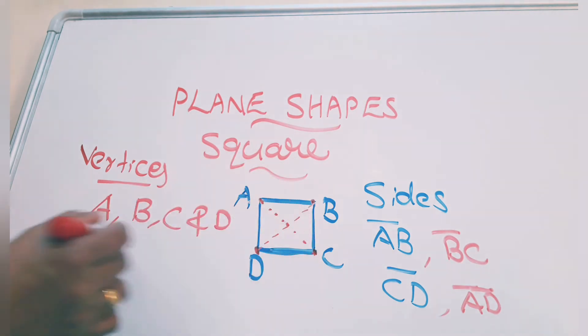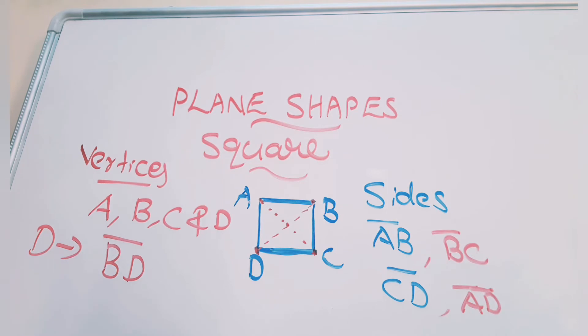Here diagonals are BD. Diagonals. D, I am marking as D. D means diagonal. BD and AC. Two diagonals. BD and AC.